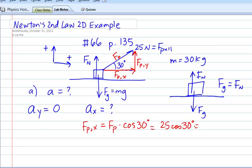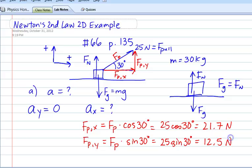I think that's root 3 over 2 if you know those special angles. But otherwise, that turns out to be about 21.7 newtons. And the force of the pole in the y direction is Fp times the sine of 30 degrees. That's going to be 25 sine of 30 degrees, which turns out to be 12.5 newtons. Okay, now those are both positive. Why? Because the x is going to the right and the y is going up.